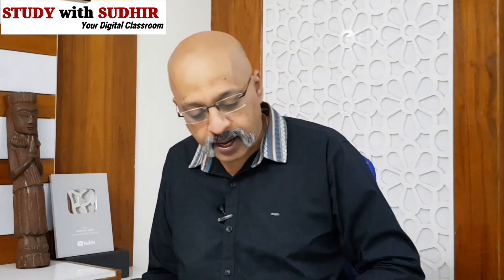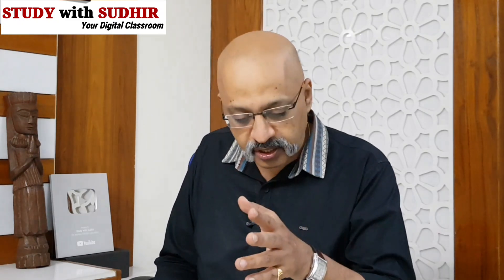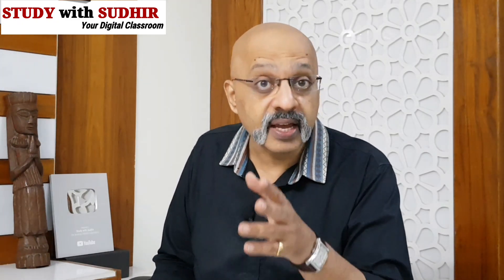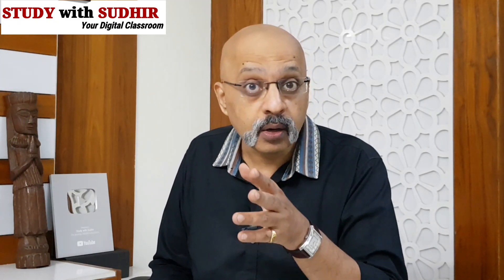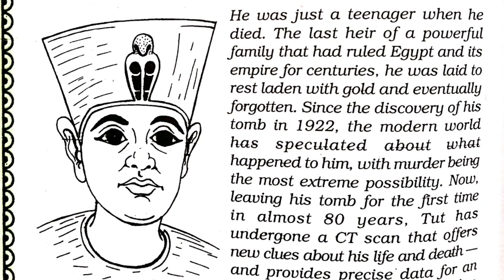Let's read the text. He was just a teenager when he died — a teenager ruler. King Tut, the last heir of a powerful family that had ruled Egypt and its empire for centuries, was laid to rest laden with gold and eventually forgotten. Since the discovery of his tomb in 1922 — just about a century ago — the modern world has speculated about what happened to him, with murder being the most extreme possibility.